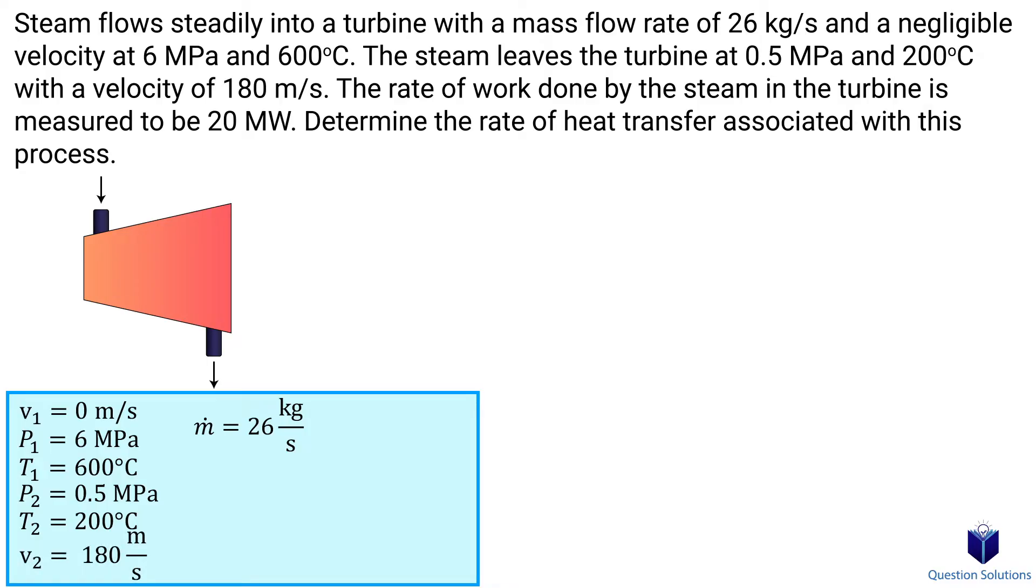During this process, the steam produces work which is measured to be 20 MW. Let's write our energy balance equation. This is a turbine problem, so we have enthalpy, kinetic energy, work output and heat loss. There is no potential energy change. Keep in mind it's one inlet and one outlet, so mass flow is the same on both sides.